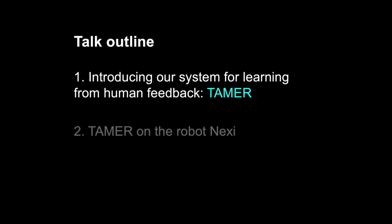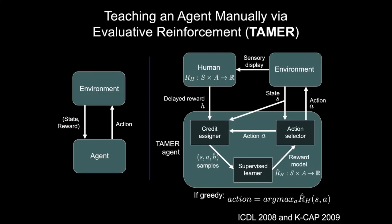The first part of the talk is introducing our system for learning from this type of human feedback, which is TAMER. On the left is the typical diagram for reinforcement learning agent-environment interaction: the agent takes actions that change the environment state, and then the new state is communicated back to the agent along with a reward. On the right is the TAMER diagram — you still have the agent and environment, but there's now a human who can see what's happening.